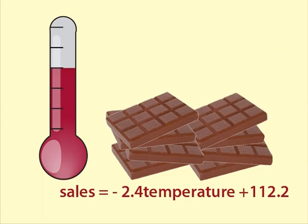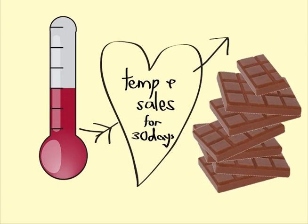This equation applies to the sample of 30 days that Helen took. She wants to know if the data provides evidence that there really is a relationship in the population — that is, for all days — between temperature and sales.